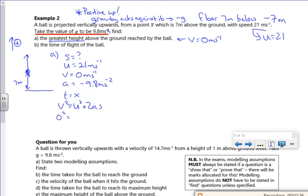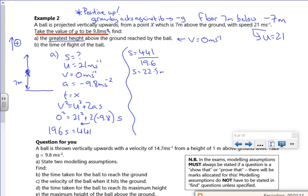So 0 squared is 21 squared plus 2 lots of minus 9.8 times S. If I take that bit over to the other side, I've got 19.6. So 19.6 lots of S is equal to 21 squared, which is 441. So my S value is 441 divided by 19.6. It gives me 22.5. Now remember the accuracy. The accuracy there is 2 sig fig. So S is 23 meters to 2 sig fig.